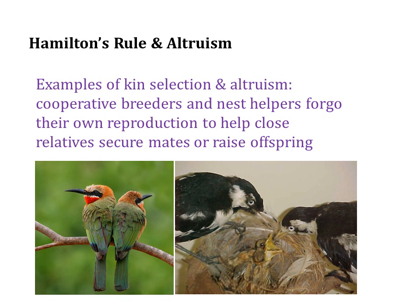There are a number of well-studied examples of kin selection in nature. For instance, in several species of birds, young individuals may forego their own reproductive opportunities to stay at the nest of close relatives and help those relatives secure mates or raise offspring. This seems to be especially true in species where suitable territories and resources are in short supply. In these cases, young individuals may stay at the nest of their parents and help raise their siblings through the first year of sexual maturity. This makes sense because those individuals may boost their indirect fitness more by staying and helping raise their siblings than they would boost their direct fitness by leaving and trying to reproduce on their own.